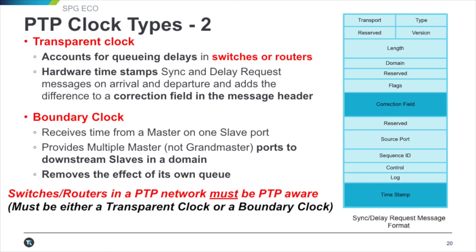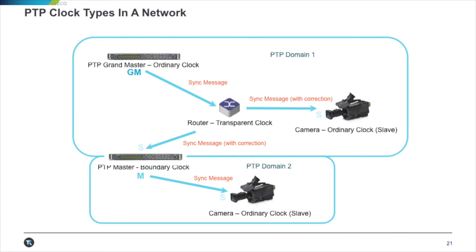The boundary clock sits between different domains — domain one and domain two — acting as a slave to the grandmaster but a master to the slaves in its own domain. All routers and switches must be PTP-aware, either as a transparent clock or a boundary clock. They must be able to recognize and handle timestamp in, timestamp out, and account for latency within the device. In the flow diagram, we have a grandmaster in domain one and a boundary clock crossing into domain two, with transparent clocks — routers — going out to slaves such as an ordinary clock for a camera or an AES-67 audio component.